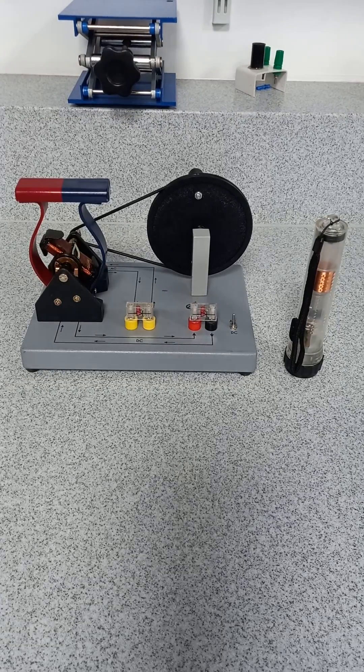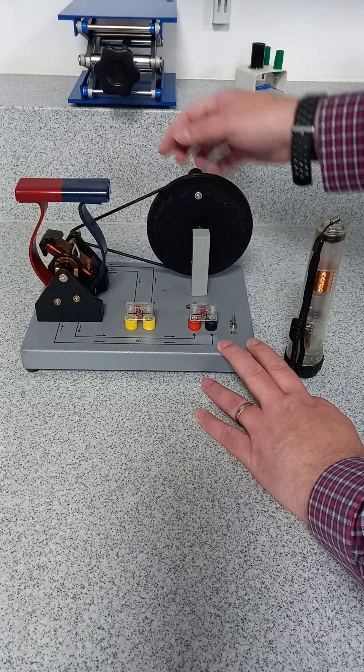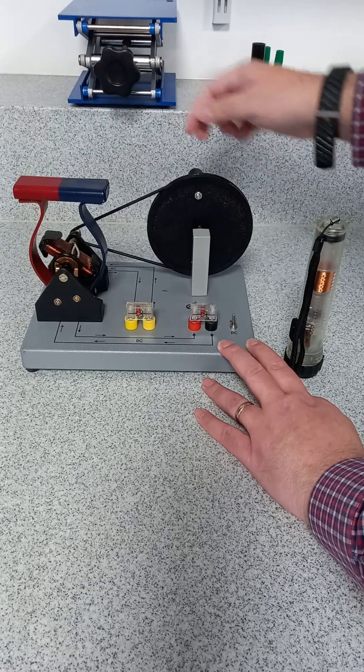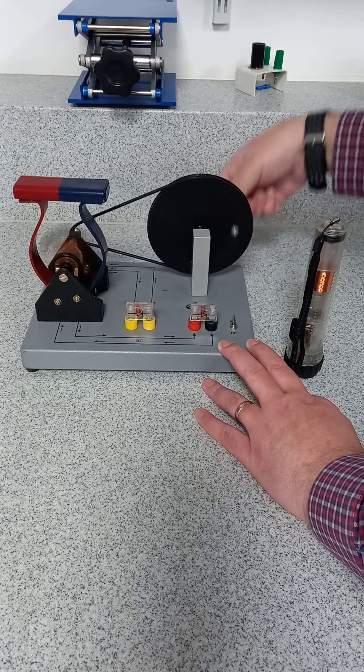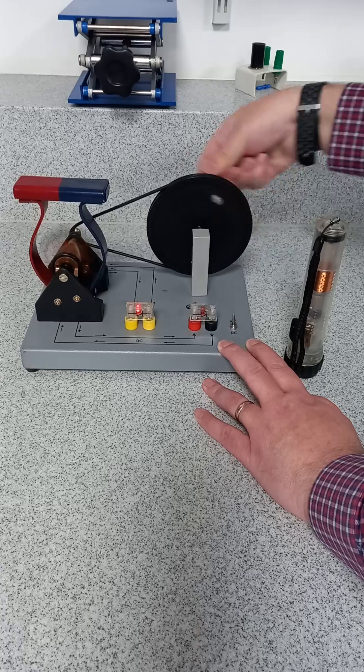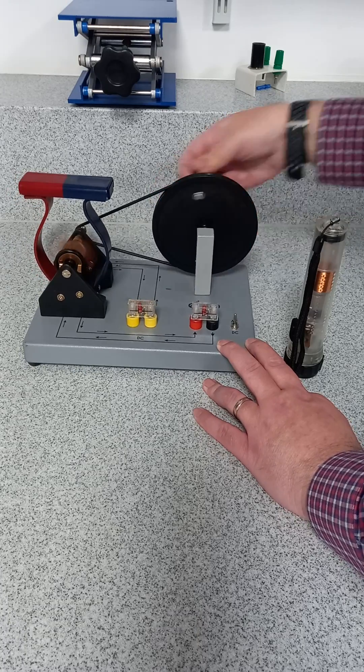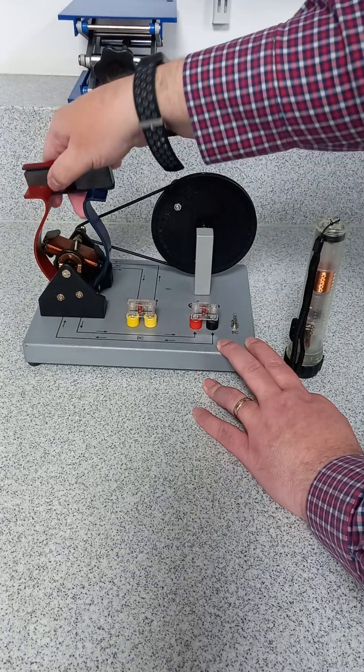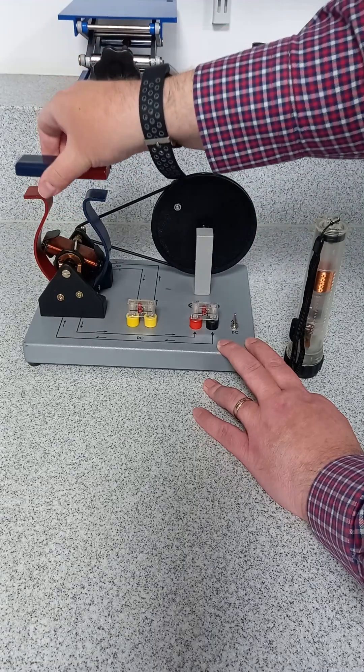Here we've got some simple demonstrations of the generator effect. This magnet can be changed around quite easily, which is nice. Spin it, LED lights up. Reverse the action, it works as well. Reverse the poles here.